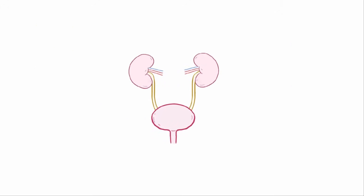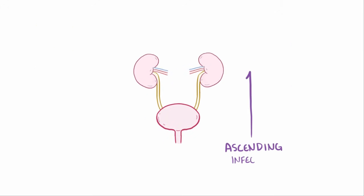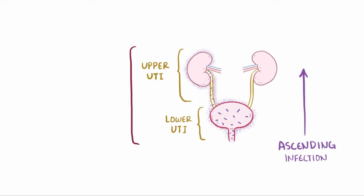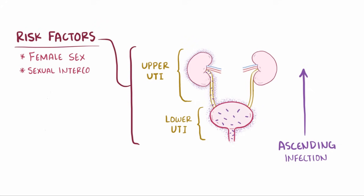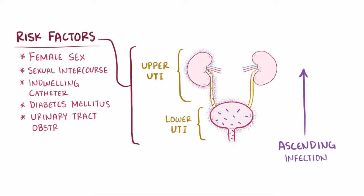Acute pyelonephritis is most often caused by ascending infection, meaning bacteria start by colonizing the urethra and bladder — which would be a lower urinary tract infection — and make their way up the ureter to the kidney. Therefore upper UTI shares a lot of the same risk factors as lower UTI, things like female sex, sexual intercourse, indwelling catheters, diabetes mellitus, and urinary tract obstruction.